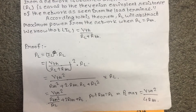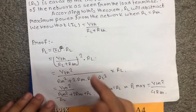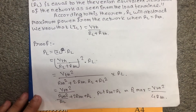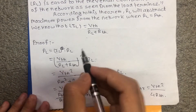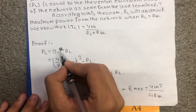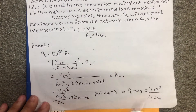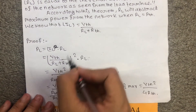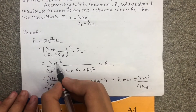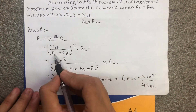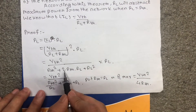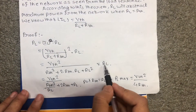Power equals I squared times R. So power equals IL squared times RL. The current IL equals Vth divided by (RL plus Rth). Substituting, we get Vth squared over (RL plus Rth) squared, using the identity (a + b) squared equals a squared plus 2ab plus r squared.